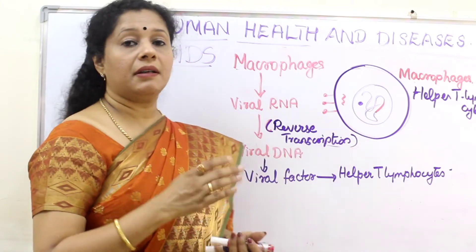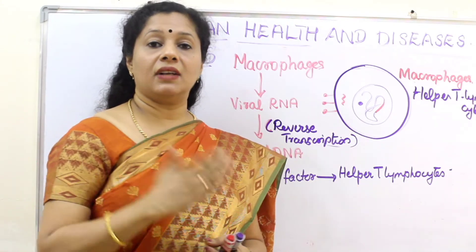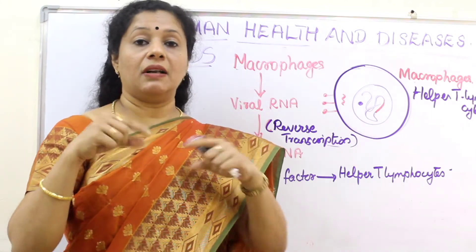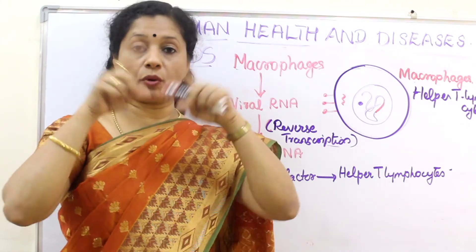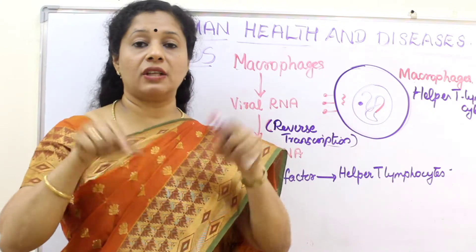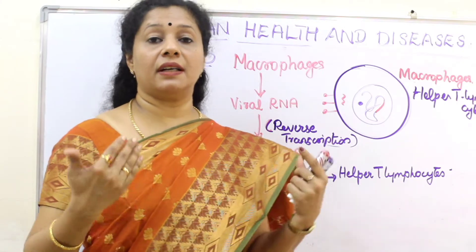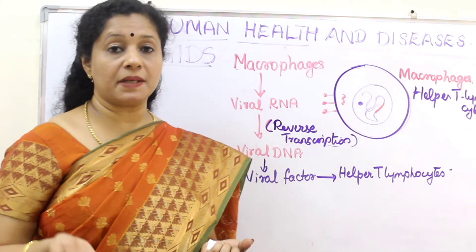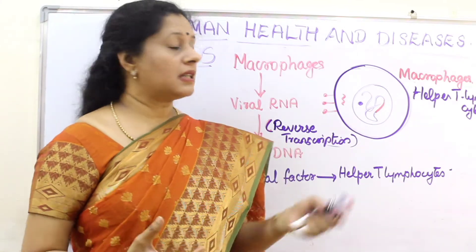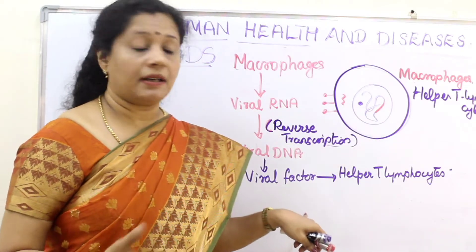After that, a large number of viral DNA copies will form. That DNA will again get converted into RNA, and each RNA will make its own protein coat using its genetic information. So they will each make a protein coat and multiply. Suppose 100 copies are made — all 100 viruses form. This is how the macrophage acts as a viral factory, producing a large number of viruses.